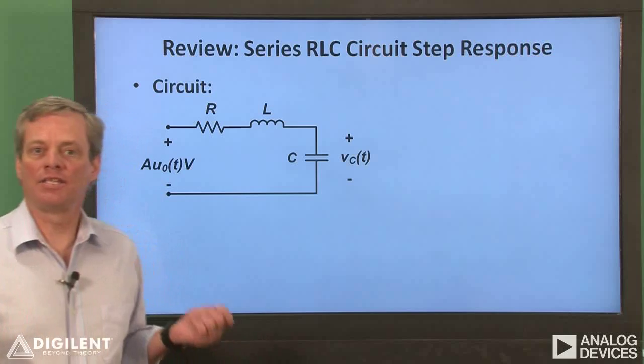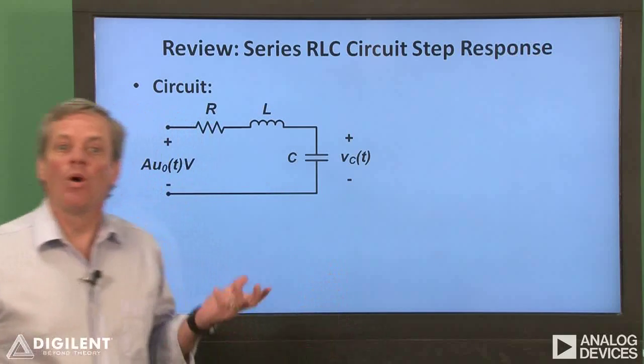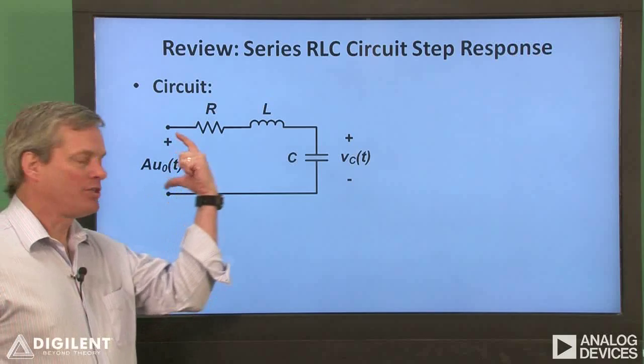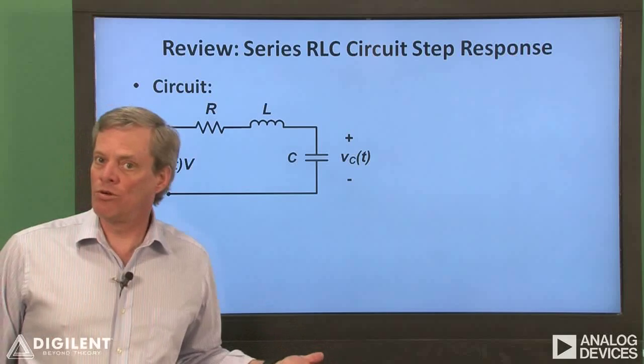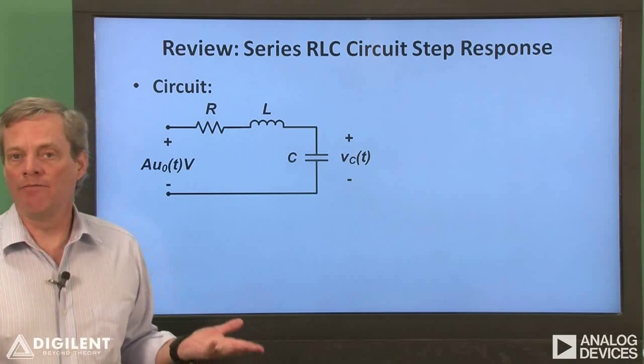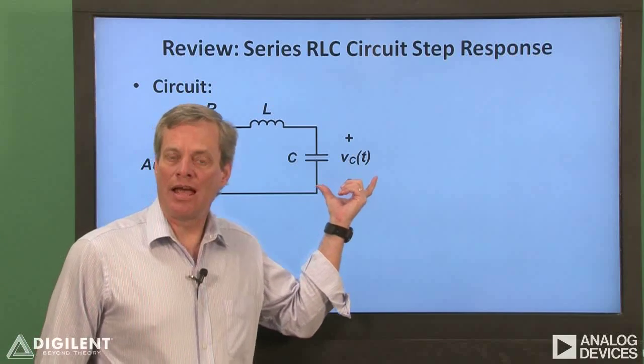First, I want to briefly review the analysis of a series RLC circuit. This is the circuit of interest. We're going to apply a step input voltage with amplitude A at these terminals, so that the input voltage is 0 for times less than 0, and A volts for times greater than 0. We'll be measuring the voltage across the capacitor as our output.